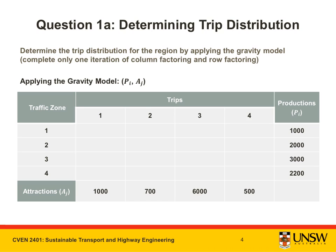We apply the gravity model by means of a trip matrix or origin-destination matrix. The cells of each row I contain the trips originating in that zone, which have as destinations the zones in the corresponding columns. Tij is the number of trips between origin I and destination J. For example, in row 1, T11 is the number of trips between zone 1 and zone 1, T12 is the number of trips between zone 1 and zone 2, and so on. The sum of all the trip values in row 1 gives us P1, which is the number of productions from zone 1.